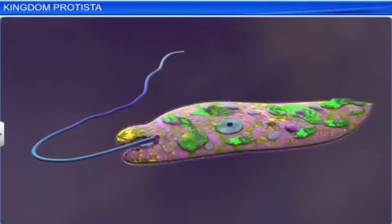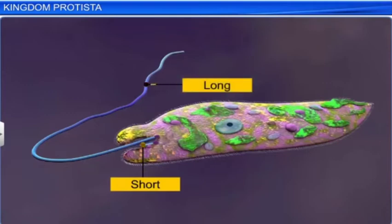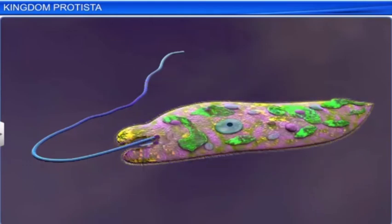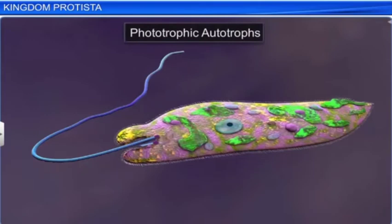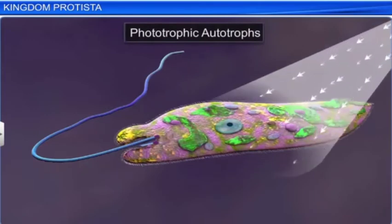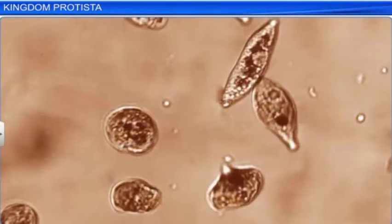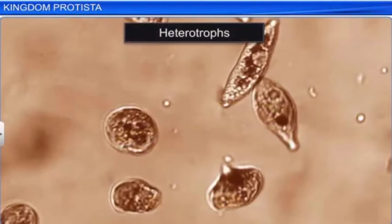The euglenoids, too, like dinoflagellates, have two flagella — one short and one long. Instead of a cell wall, the euglenoids have a protein-rich layer called pellicle that makes their bodies flexible. The euglenoids are phototrophic autotrophs in the presence of sunlight since they have chloroplasts like plants. However, they behave like heterotrophs in the absence of sunlight.